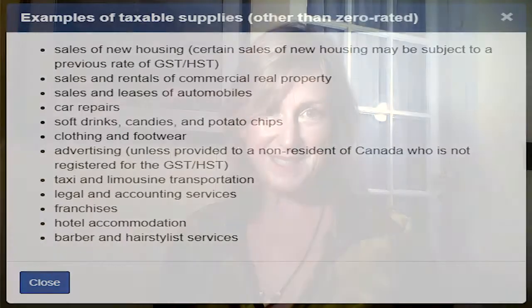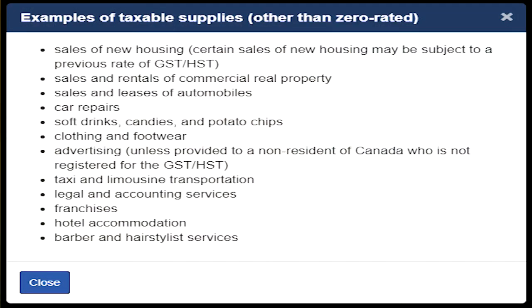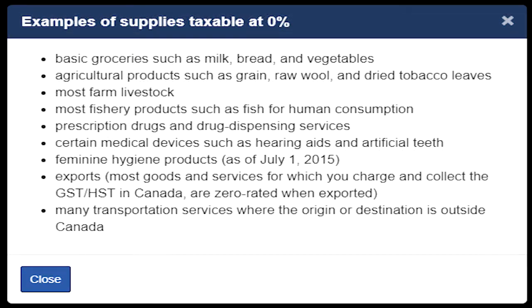If you're registered for GST or HST, then normally you're just going to be charging your basic GST or HST rate on all of your invoices. Here are examples of items that are taxable: the typical items you'd buy at a shop such as clothing and footwear, also legal and accounting services and lots of junk food.